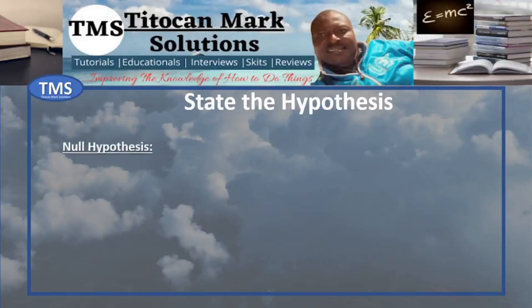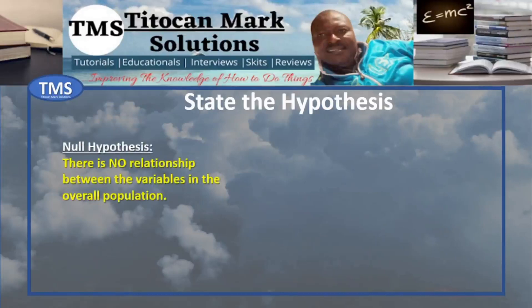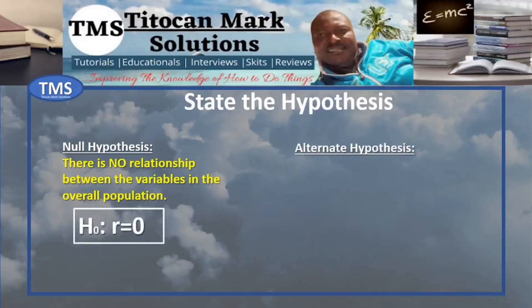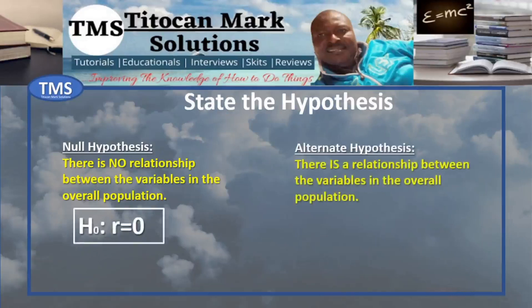For the null hypothesis, it states that there is no relationship between the variables in the overall population — that is, r is equal to zero. For the alternate hypothesis, it states that there is a relationship between the variables in the overall population — that is, r is not equal to zero.